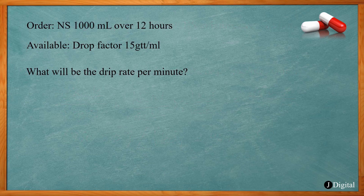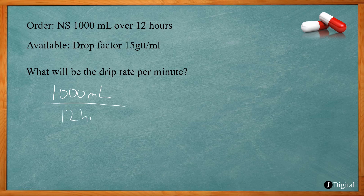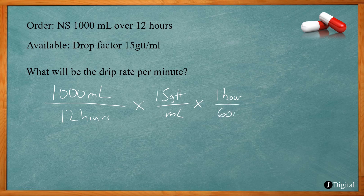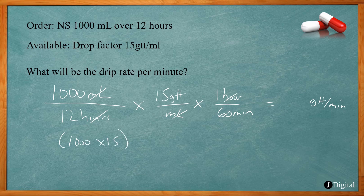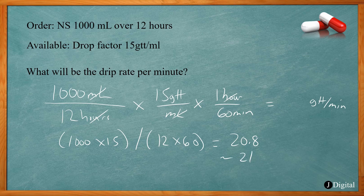This problem orders normal saline 1000 milliliters over 12 hours with a drop factor of 15 drops per milliliter. We set up: 1000 milliliters over 12 hours, times 15 drops per milliliter, times 1 hour over 60 minutes. Milliliters and hours cancel, leaving drops per minute: 1000 times 15 divided by (12 times 60) equals 20.8. We can't have 0.8 of a drop, so we round to 21 drops per minute.